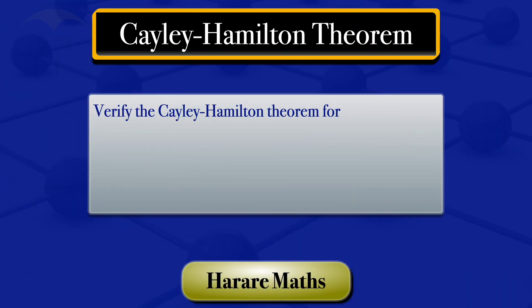In this tutorial, I am going to verify the Cayley-Hamilton theorem for the matrix A, which is the element 6, 5, 2, 0, 4, 0, 1, 3, 9.